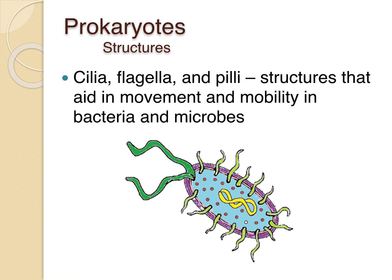Some structures found in prokaryotic cells are cilia, flagella, and pili. Those help move the bacterial cell through whatever fluid it's in.